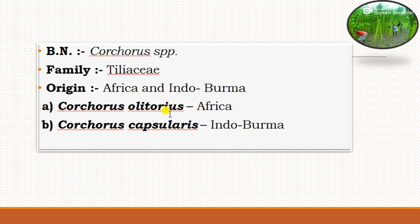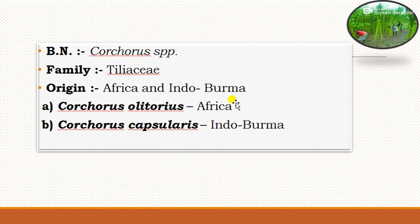The family of jute belongs to Tiliaceae. The origin of jute is Africa and Indo-Burma — specifically, white jute (Corchorus capsularis) originated from Indo-Burma, and Tossa jute (Corchorus olitorius) originated from Africa.